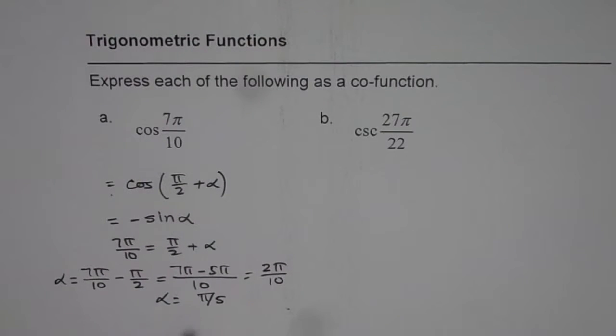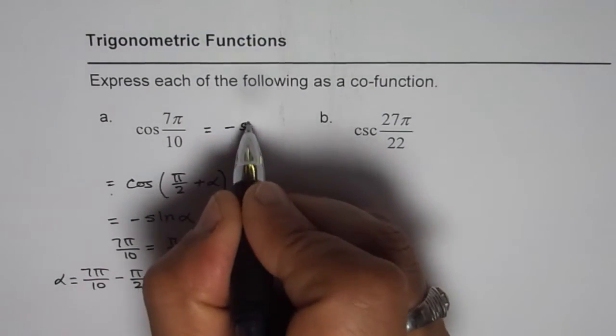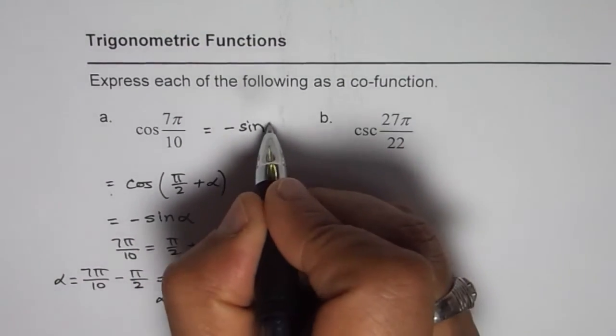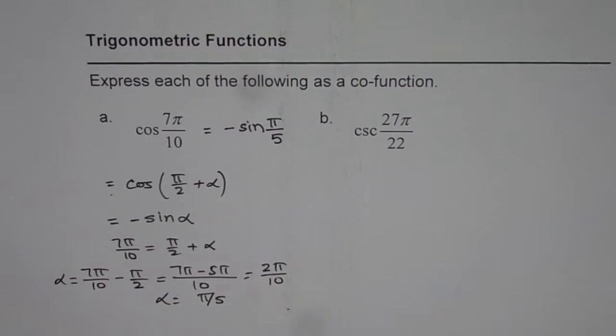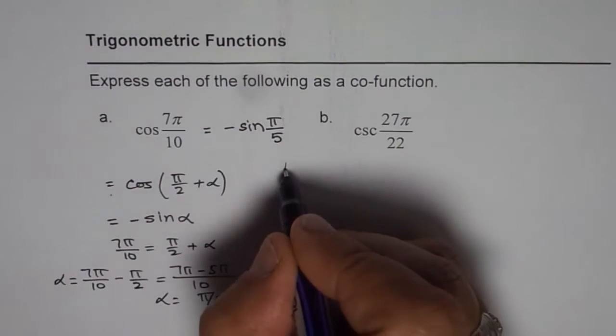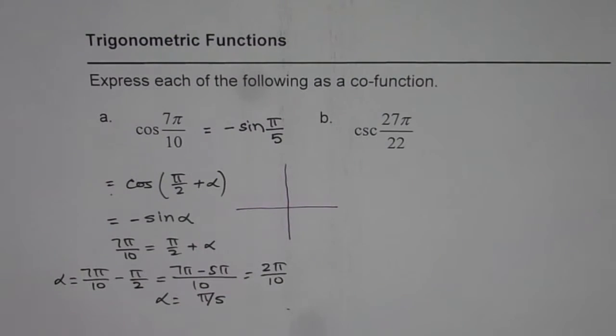So therefore we can write 7π/10 as minus sine π/5. So that is the way to get the answer. You could have got it using coordinate system also. It is kind of interesting and helpful at times.